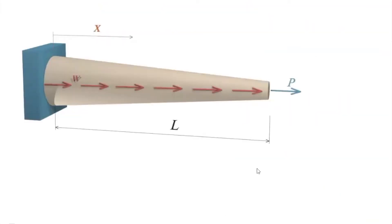Consider a general axially loaded element with variable cross-section area and variable loading. This is the most general form of axially loaded element we can imagine. We cannot use the FL/EA equation here because the cross-section area is not constant — that means stress is variable along its length, and strain is also variable along its length. We cannot use those simplified equations because the assumptions are not valid.